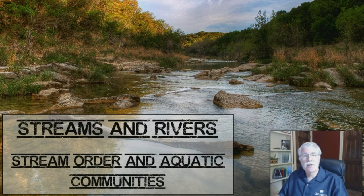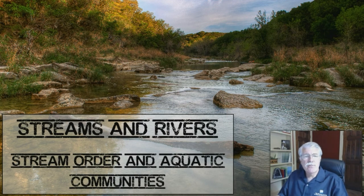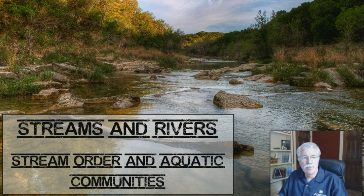The next part of our lesson on streams and rivers is stream water and aquatic communities. Precipitation first collects at the top of the watershed. This is in the headwaters, the headwaters of each stream.